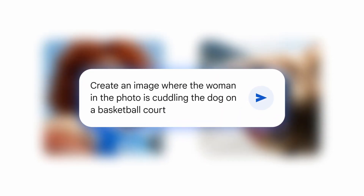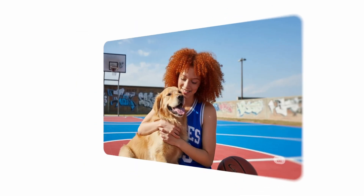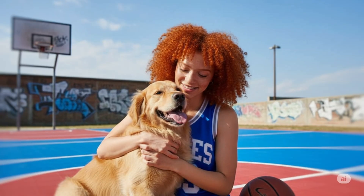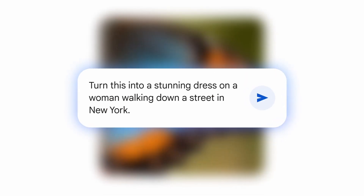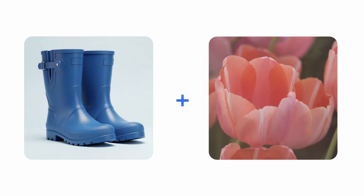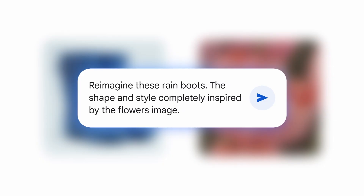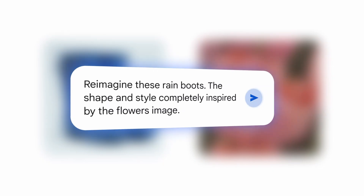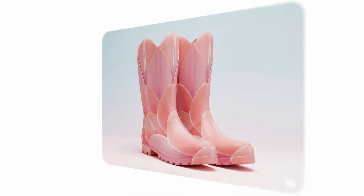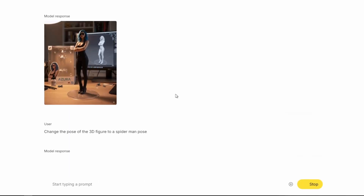If you're still paying for Photoshop or Midjourney, you're wasting money. This changes everything. Did you know you can convert an old photo to color and high quality, create thumbnails that generate millions of views, and model 3D objects? All of this with a single tool. Most people think they need five different apps, but they're missing out while others dominate the market with Nano Banana.